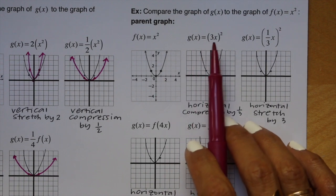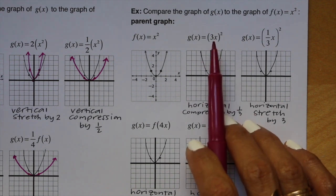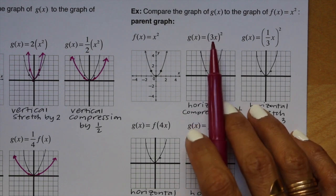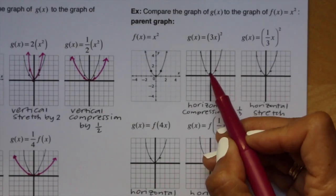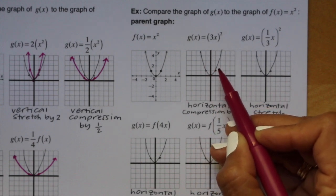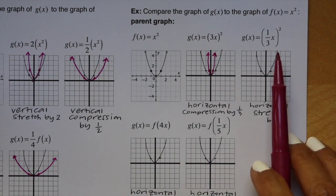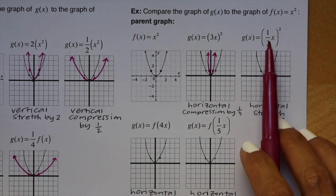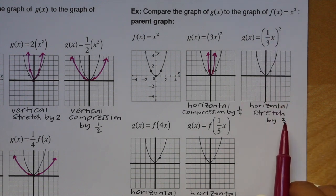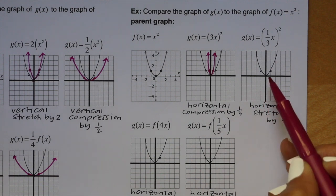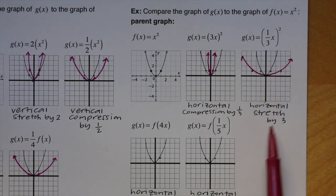This example says compare the graph of g of x to the graph of f of x equals x squared. The first equation is g of x equals (3x) quantity squared. Because x is being multiplied by 3 on the inside, we have a horizontal stretch or compression. Numbers inside the parentheses work backwards — this is actually a horizontal compression by 1 third. The points that were going out 1 from the y-axis now only go out 1 third. For g of x equals (1 third x) quantity squared, working backwards from 1 third gives a horizontal stretch by 3, moving the points out 3 from the y-axis.